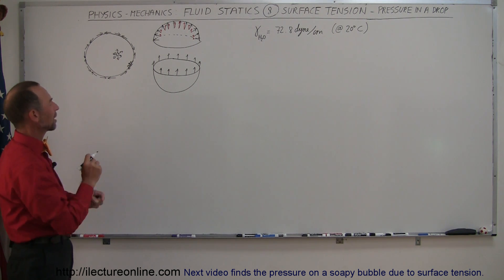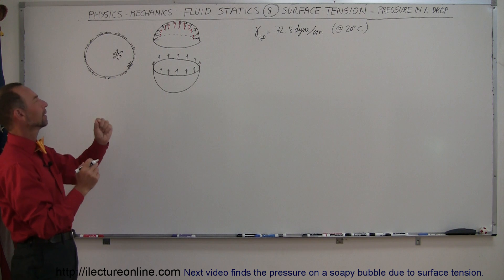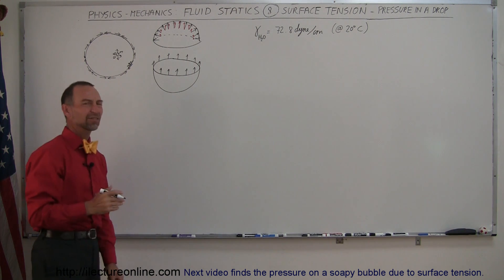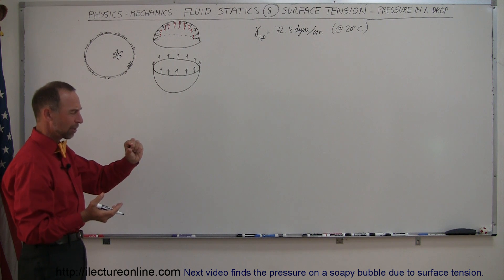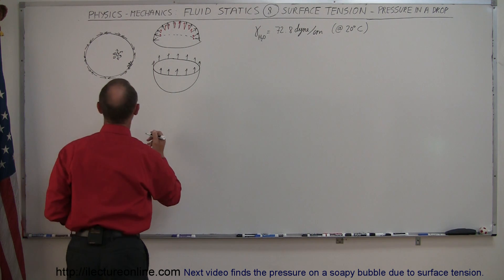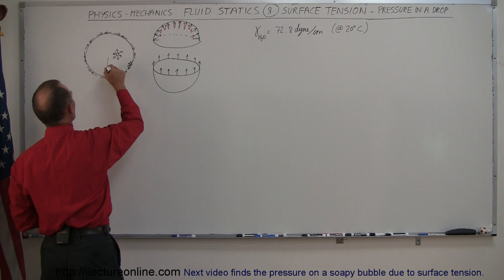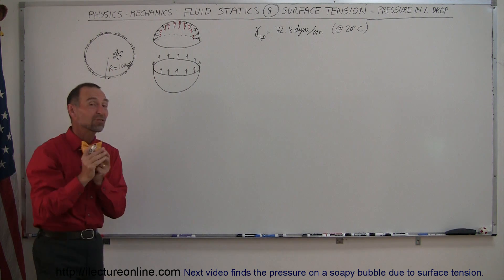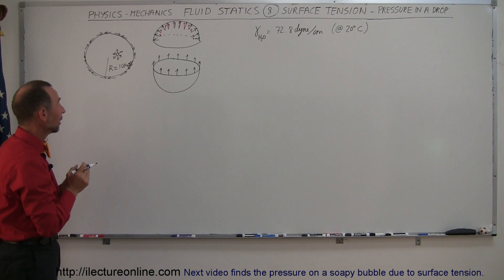So let's say, how big should we make our water drop? Let's make it a radius of, let's start with a one centimeter water drop. That's a pretty big water drop, isn't it? Well, just for the sake of argument, let's say that we start out with the radius equal to one centimeter. What would be the increased pressure inside the water drop as compared to outside the water drop?